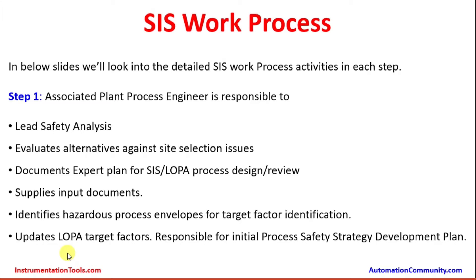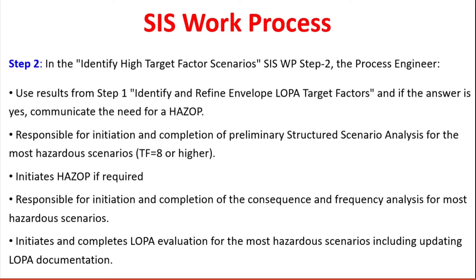The process engineer updates LOPA target factors and is responsible for the initial process safety strategy development plan. In the second step — identify high target factor scenarios — the process engineer again leads the activity. They use results from step one to identify and refine LOPA target factors, and if required, communicate the need for a HAZOP — Hazardous Operability Study — carried out by a team of process experts and highly skilled chemical engineers.